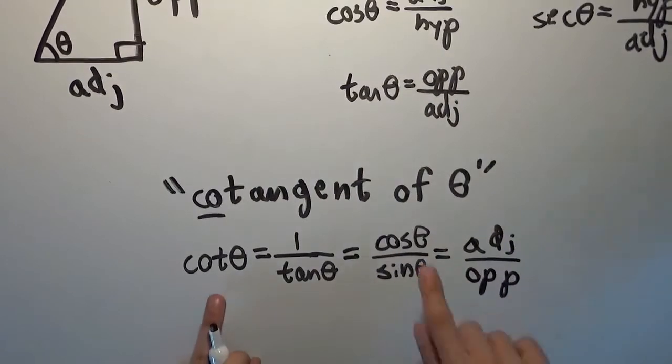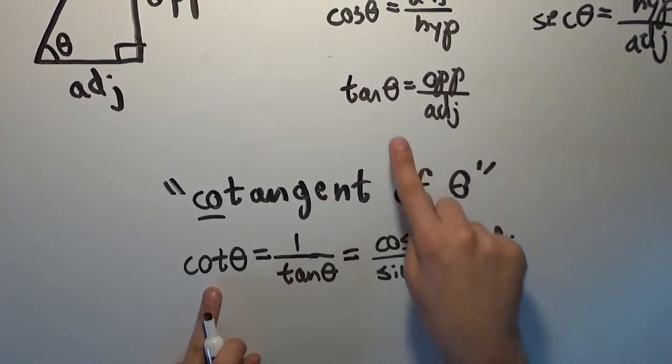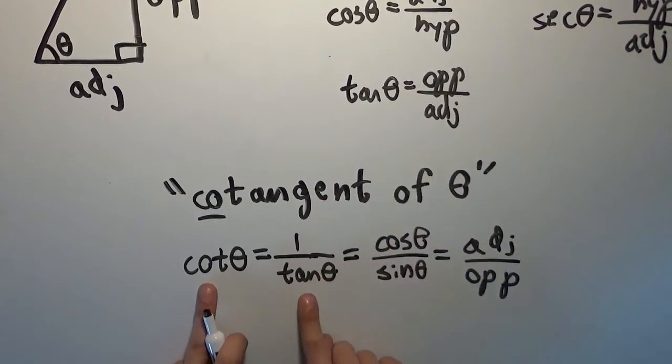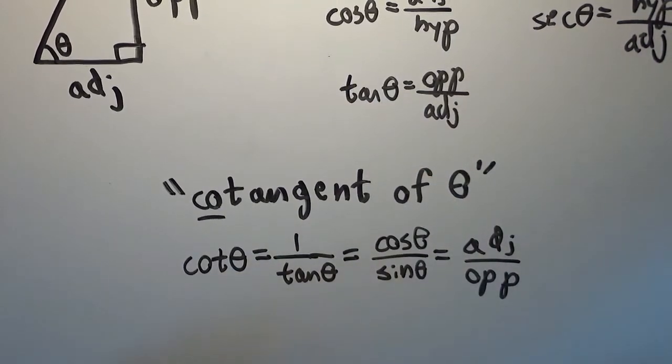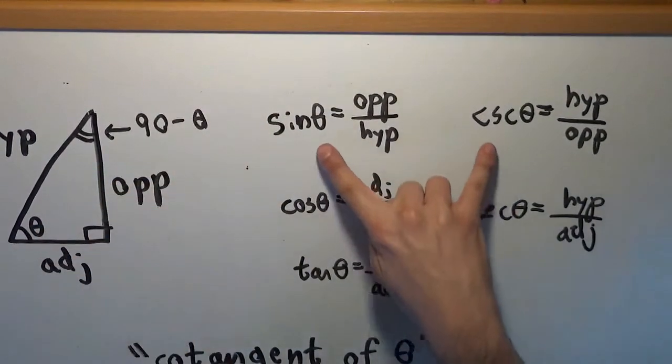And you'll see that this is actually a unique pairing among all of these trigonometric functions. Because not only are these co-functions, they are reciprocals. That's not the case with the others. These are co-functions, but these are reciprocals.